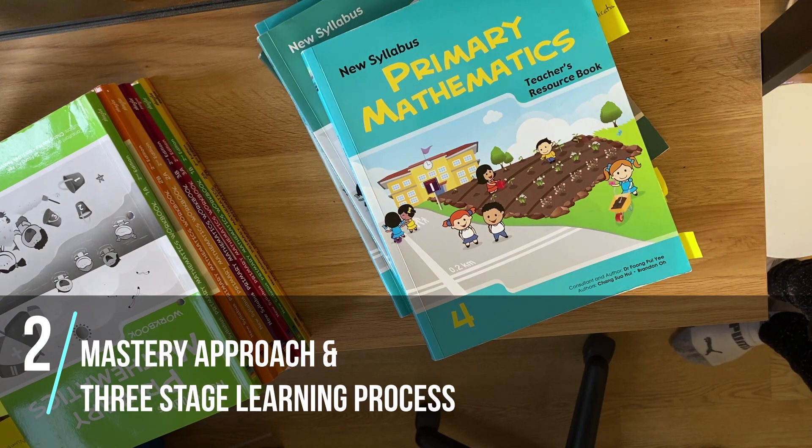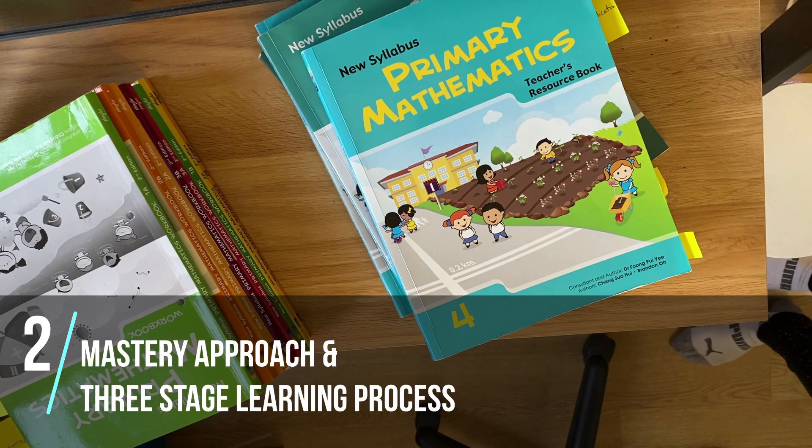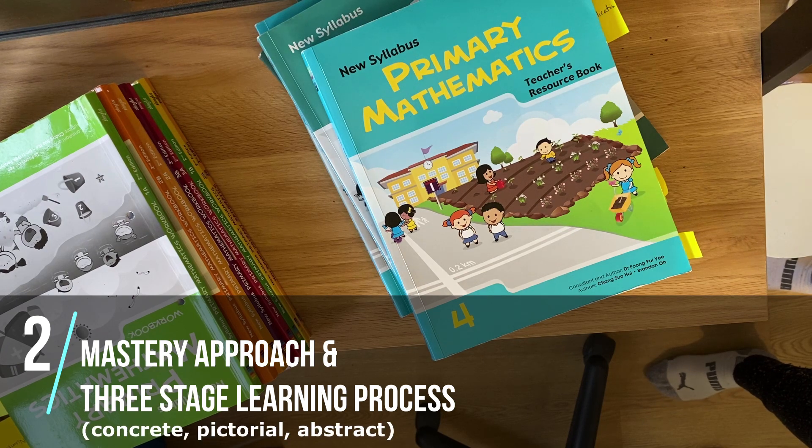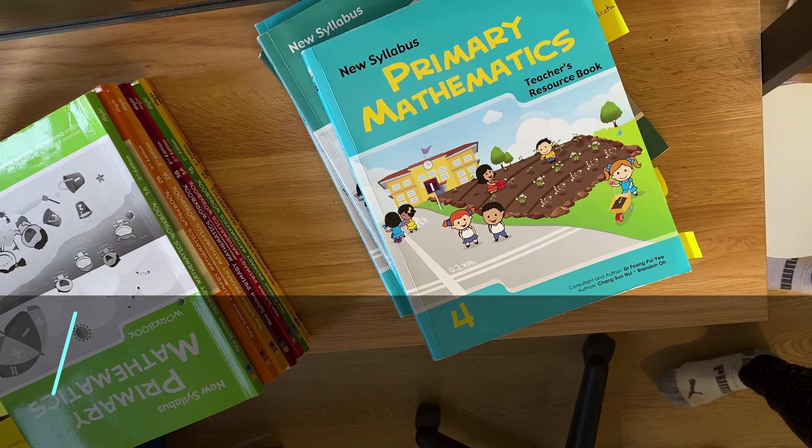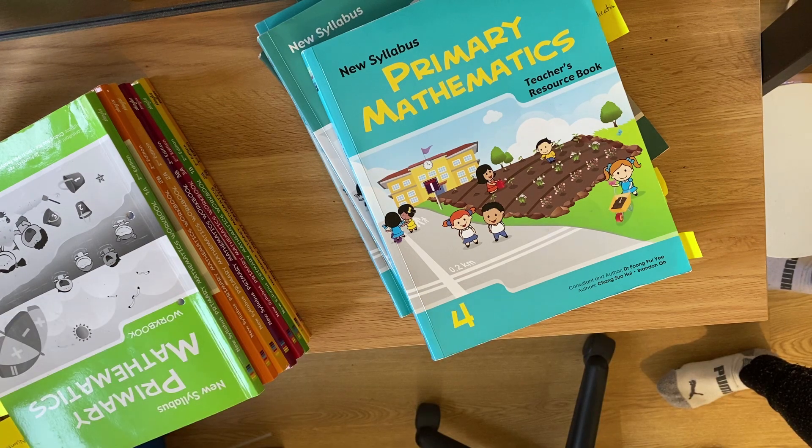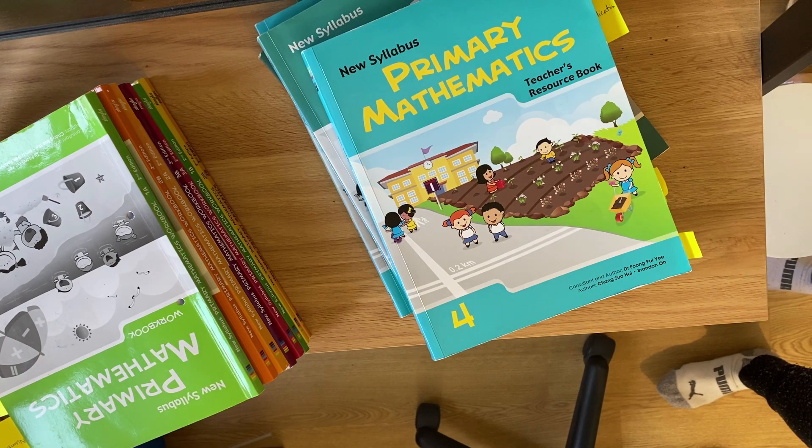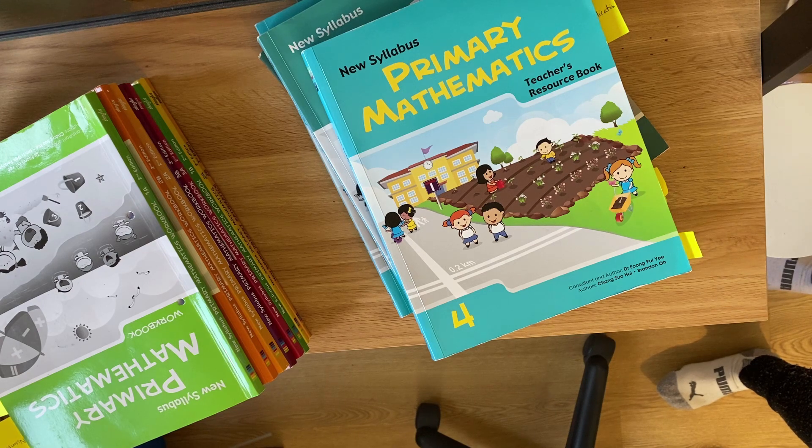Singapore Maths uses a mastery approach and it uses a three-stage learning process: concrete, pictorial and abstract. A mastery approach means you're studying each topic in depth and sequentially. There are cumulative review chapters, and that is really the only way to review previously learned units. Otherwise once you're finished with, say, the fractions unit, you're not going to look at it again until next year.